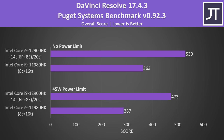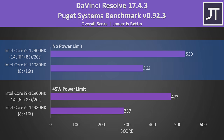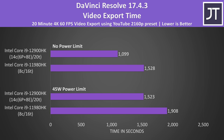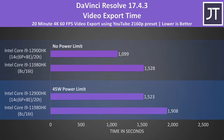DaVinci Resolve was also tested with the Puget Systems benchmark, and this test will also make use of the GPUs available. With no power limit the 12900HK was scoring 46% higher than 11th gen — a big improvement for a single generation. I've also used my own project to test export time with Resolve, again with the DGPUs disabled. In this test the 12900HK was able to complete the export task 39% faster than the 11980HK with no power limit, or 25% faster when both are power limited to 45 watts.